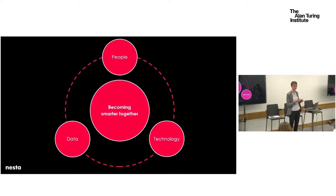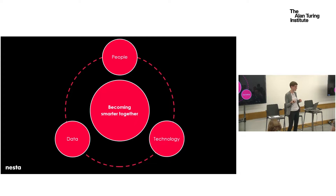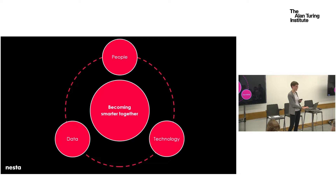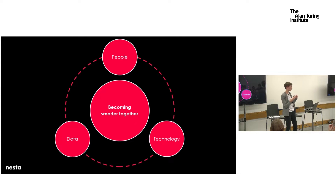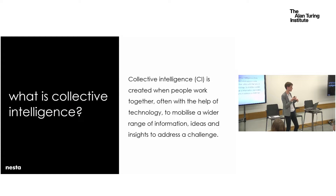Thanks to technological progress, we're now able to mobilise human intelligence at greater scale and in new ways — particularly in three main ways. First, technology is connecting more of us together. Second, we all have smartphones and there's constantly new data being generated that can help us unlock fresh insights. Third, technology can perform parts of intelligence that humans are not so good at, such as processing large volumes of data. Essentially, we're talking about combining humans, data and technology to achieve a common goal or find a solution to a complex problem. We call this process of mobilising a wider range of information, insights and ideas: collective intelligence.